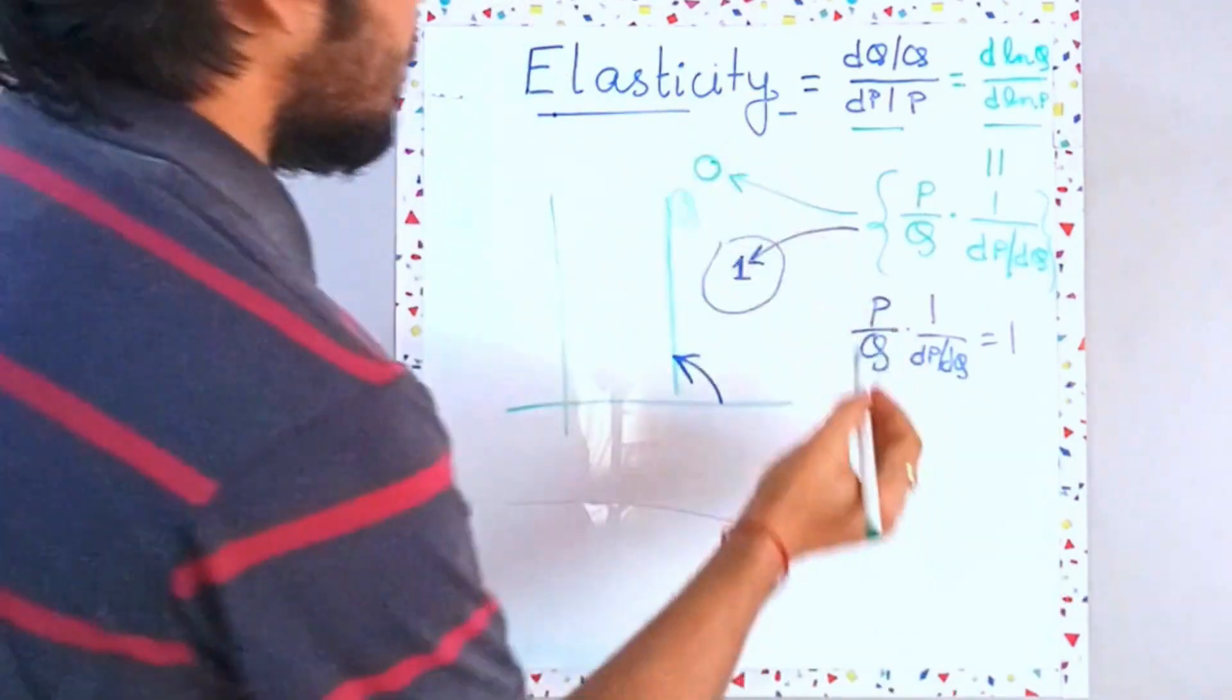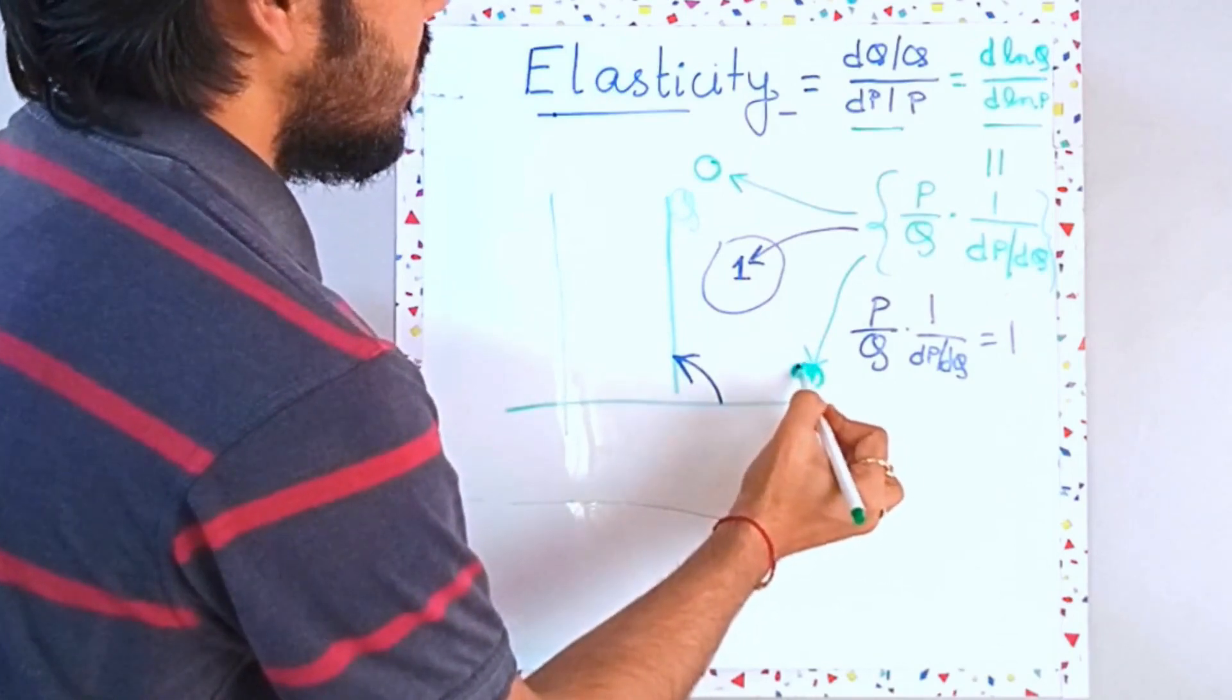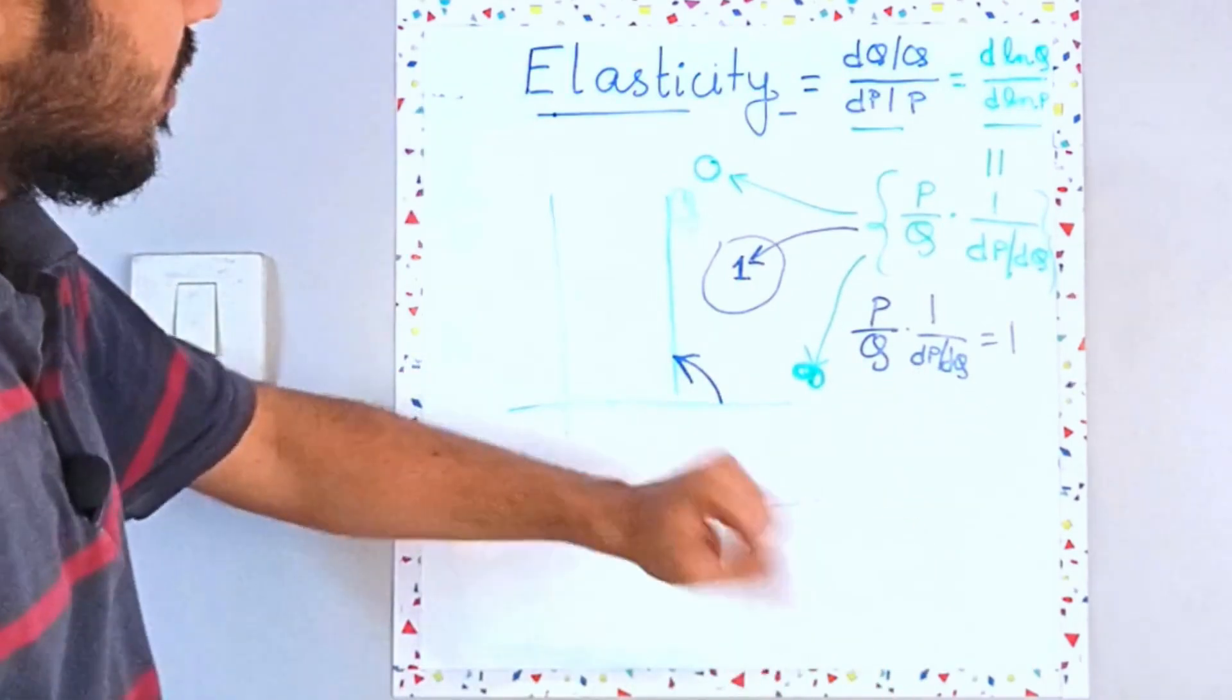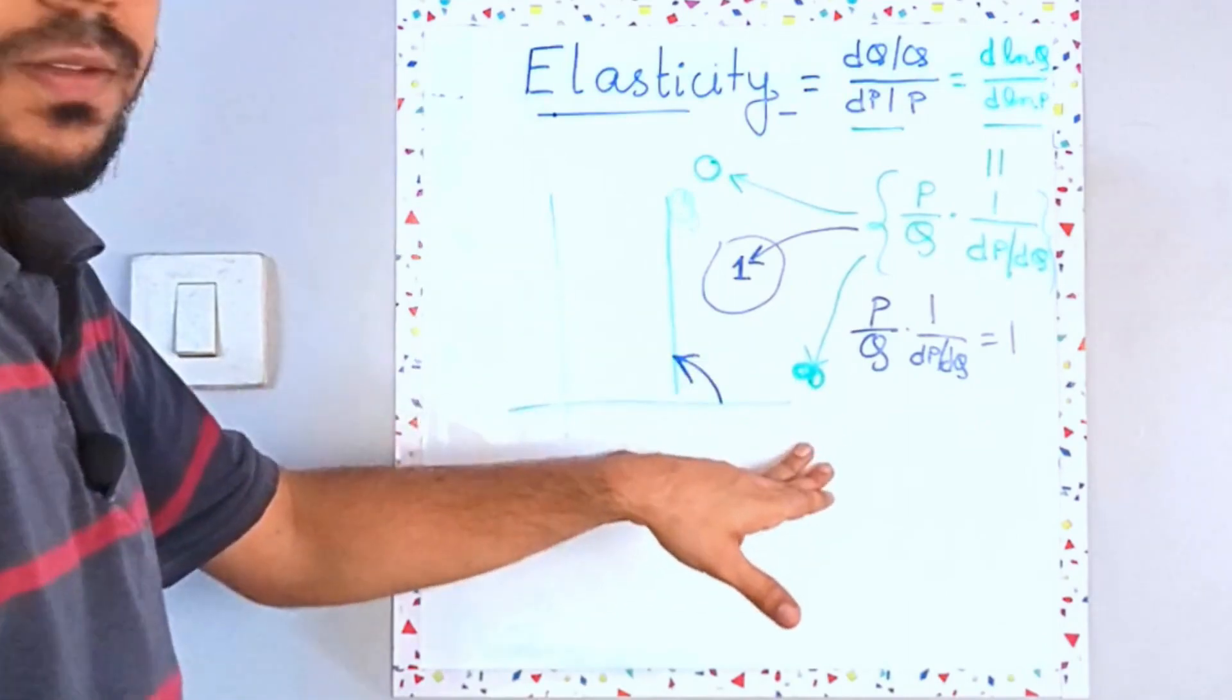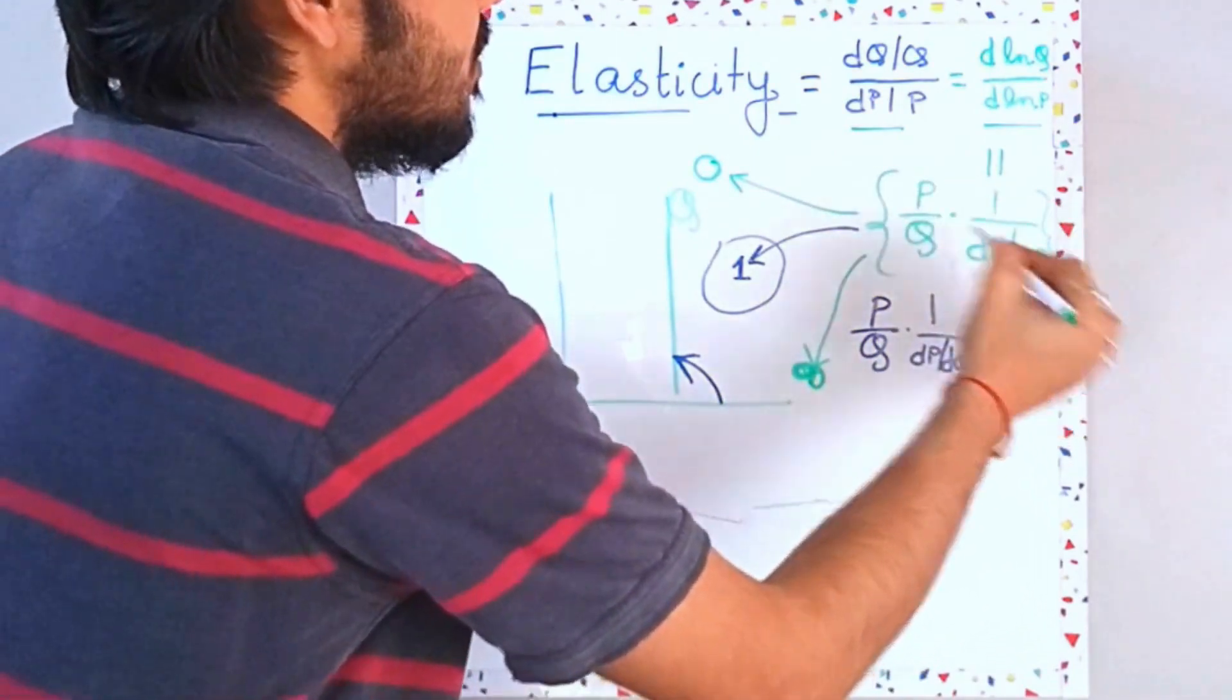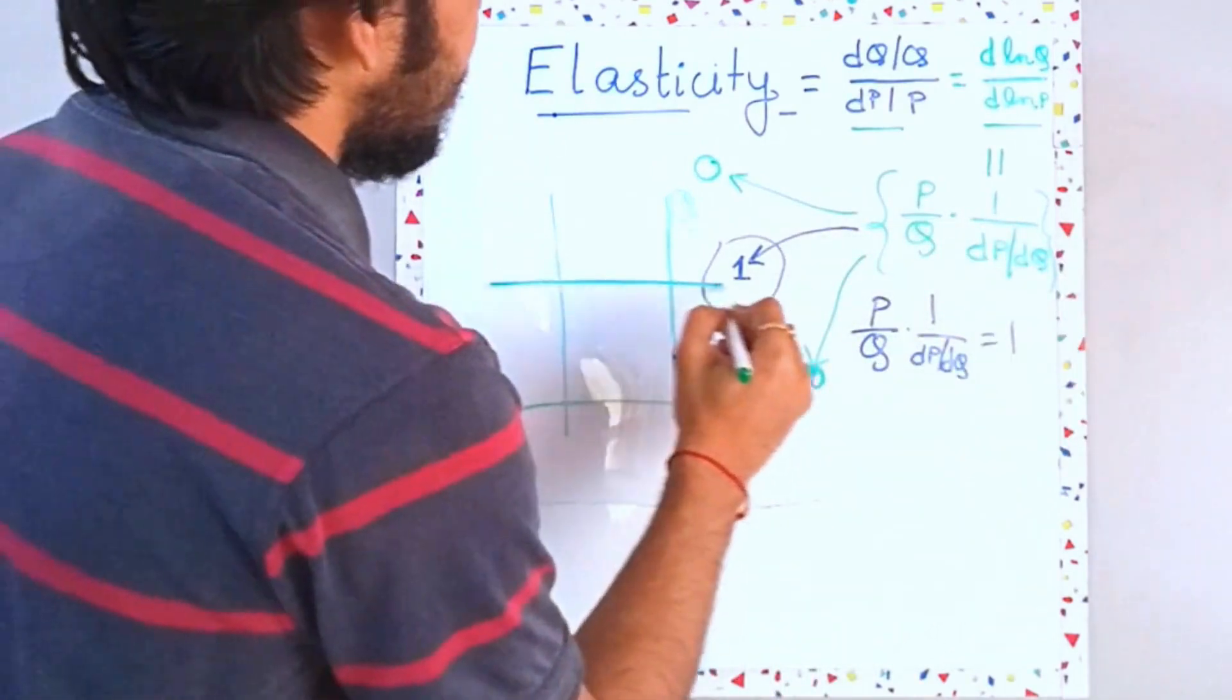Now, the third case, interesting case would be when your elasticity is infinity or you can say that this is your highly elastic or perfectly elastic, right? So for perfectly elastic, you will have this guy as infinity. So denominator, because these are finite numbers, so denominator has to be tending towards zero.